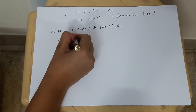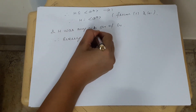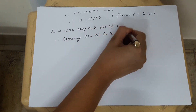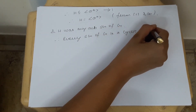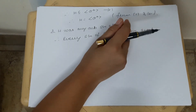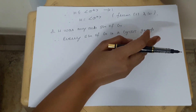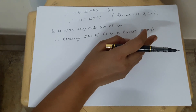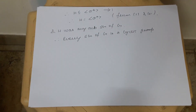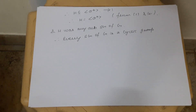Therefore H is a cyclic group generated by A^R, and H was any arbitrary subgroup of G. Therefore every subgroup of G is a cyclic group. We have thus concluded that every subgroup of a cyclic group is cyclic. This is a very important theorem. From the next video onwards, we will cover each and every theorem on the topic of cyclic groups. If you liked this video, please press the like button, and if you want to watch more videos on higher mathematics or B.Sc. and M.Sc. mathematics, don't forget to subscribe. Thank you so much for watching.